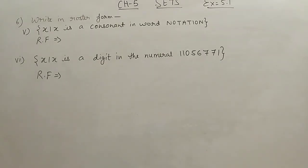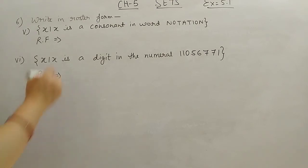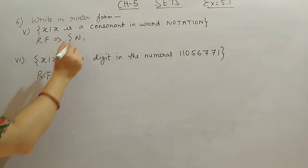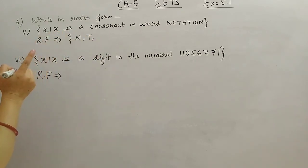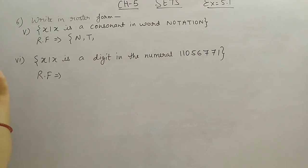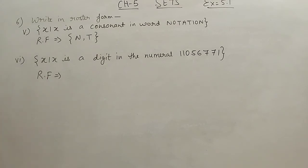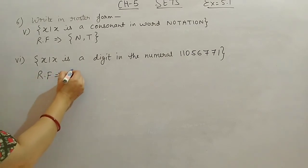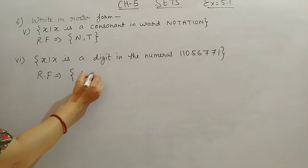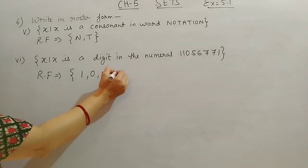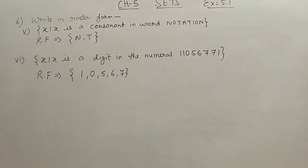Fifth: X such that X is a consonant in the word NOTATION. Consonants are letters that are not vowels. Going through: N (consonant), O (vowel, skip), T (consonant), A (vowel, skip), T (already written), I (vowel, skip), O (vowel, skip), N (already written). So roster form: {N, T}. Sixth: X such that X is a digit in the numeral 11056771. Writing each digit once: {1, 0, 5, 6, 7}. Seven appears twice and 1 appears three times, but we write each only once.